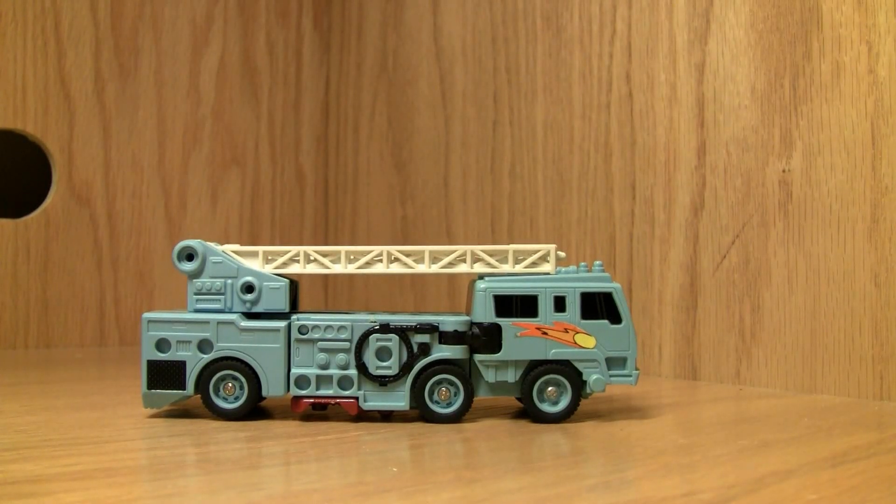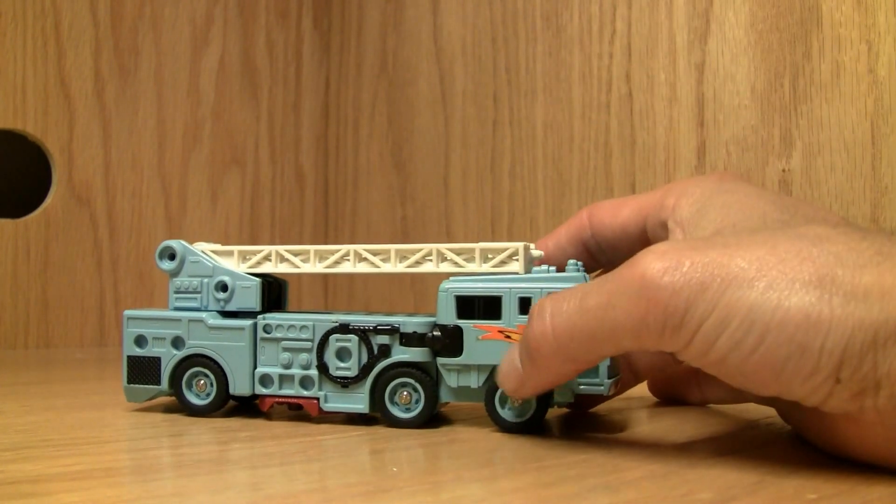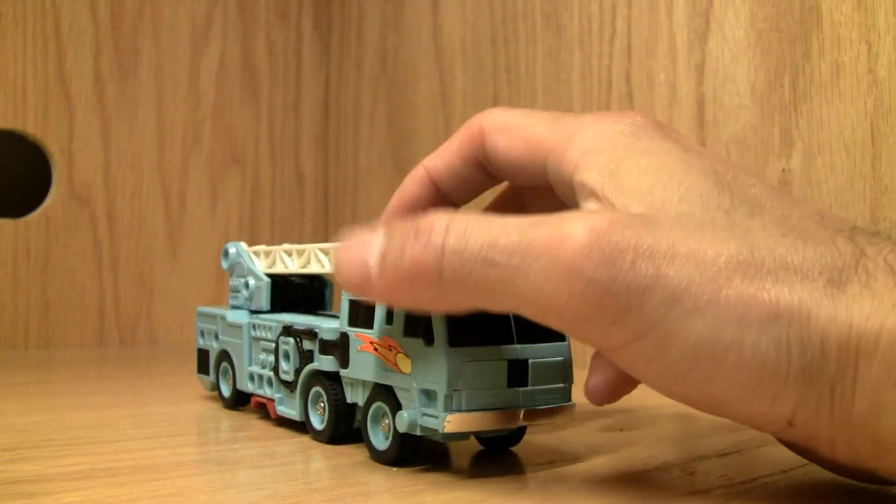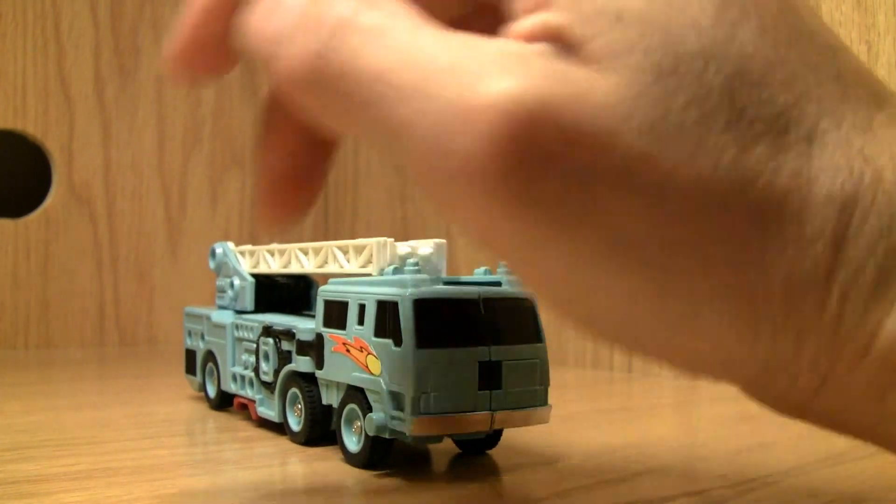Konnichiwa YouTubers, this is Redstock straight from Norfolk Virginia. Yeah, I'm back in the States. Today we're going to do a video review on G1 Protectobot Hotspot. Now I really like this baby blue color and you hardly get to see fire engines that color. Tell you the truth, I've never seen one myself.